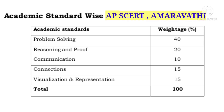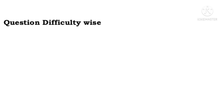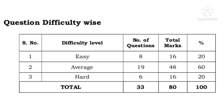Problem Solving is 40%, Reasoning and Proof is given 20%, Communication is given 10%, Connection is given 15%, and Visualization and Representation is given 15%, totaling 100%. These are the academic standards question-wise for difficulty level.